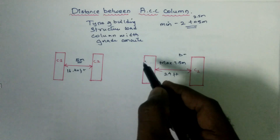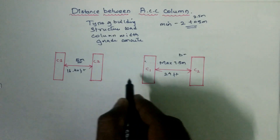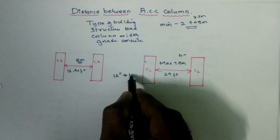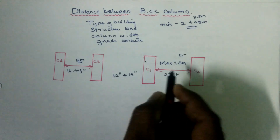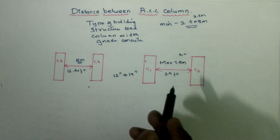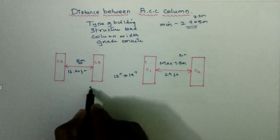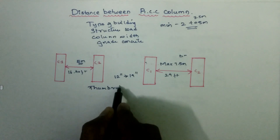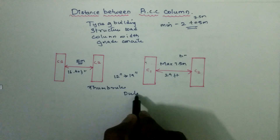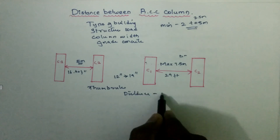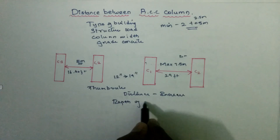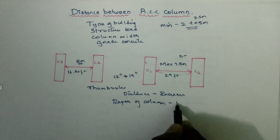We can also increase the span up to 8 meters by increasing the beam depth. For example, if you are taking a cross section and the depth is 12 inches, you can increase it to 14 inches. If we increase the depth to accommodate 1 meter more span, the distance between columns can increase accordingly — this is the thumb rule.